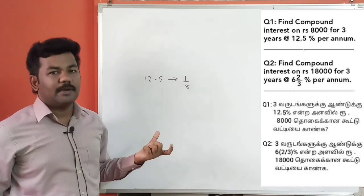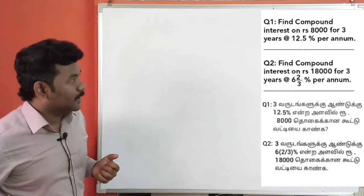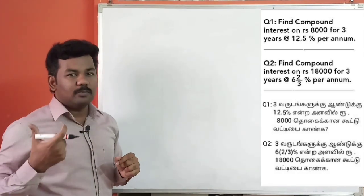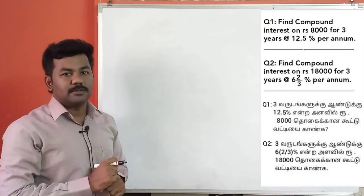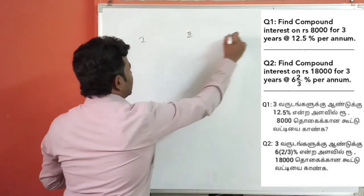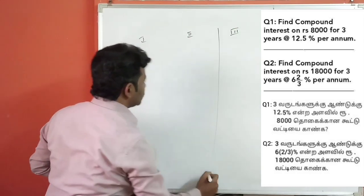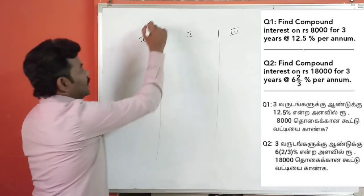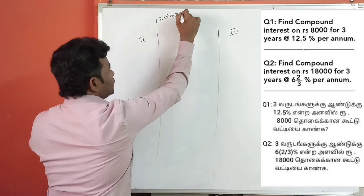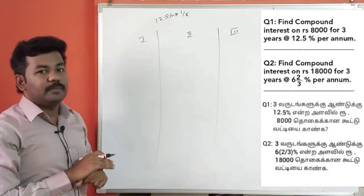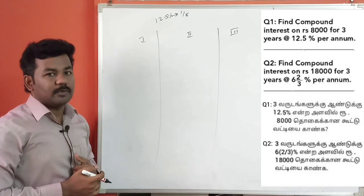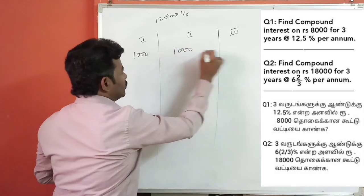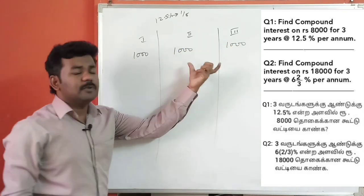We multiply 8,000 to get the answer. Let's try 12.5 as 9 by 8. If we calculate 8,000 multiplied by 9 by 8, we get 1,000. So the interest portion per step is 1,000.